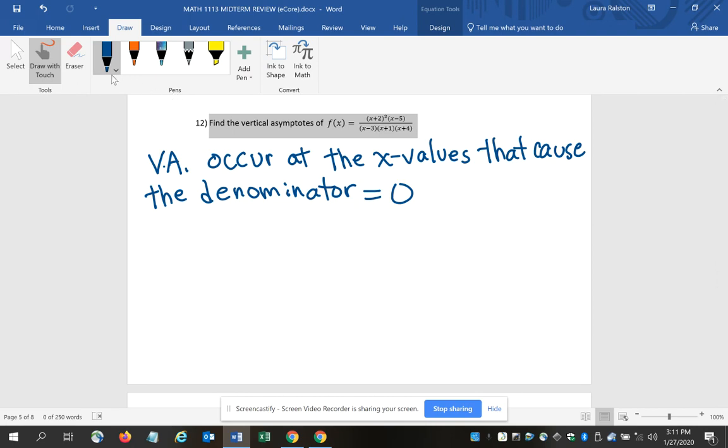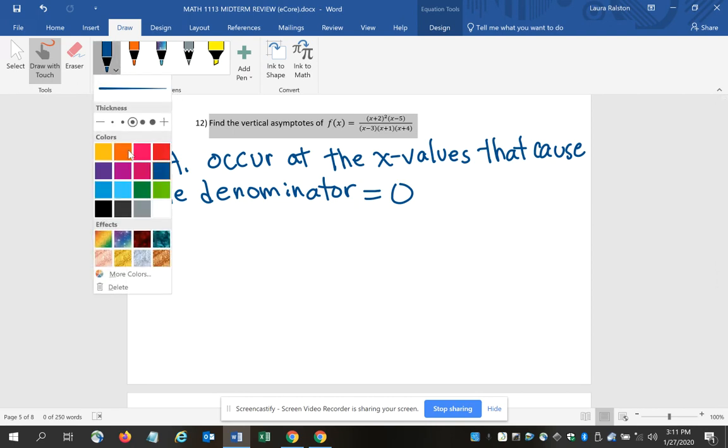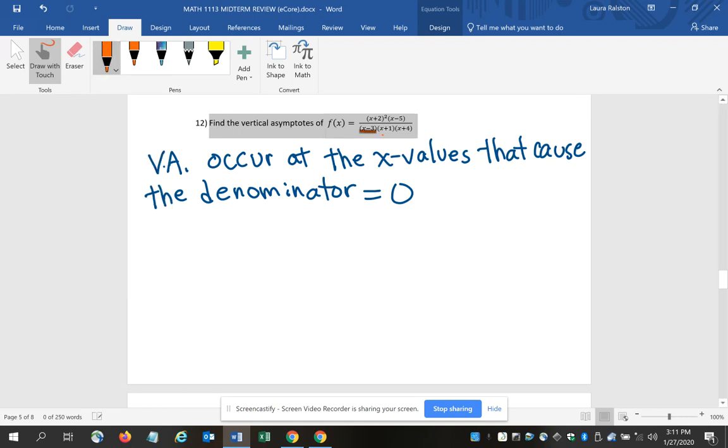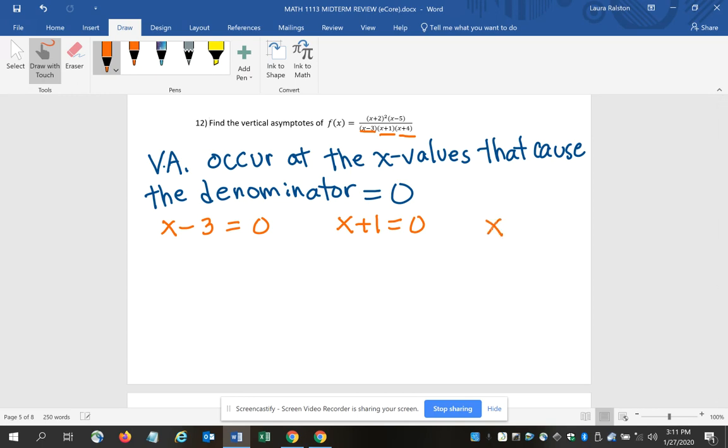When I look at this problem and I look at the denominator – that would be these three pieces: x minus 3, x plus 1, and x plus 4 – I'm going to take each one of those and set them equal to 0 because I don't want to avoid whatever number is going to make them equal to 0. So x minus 3 equals 0, x plus 1 equals 0, and x plus 4 equals 0.